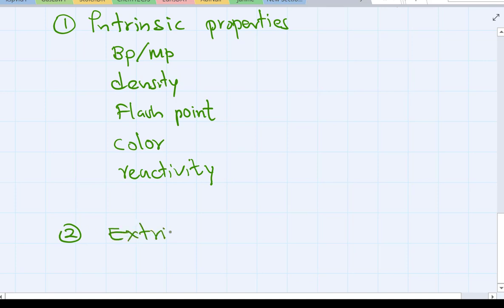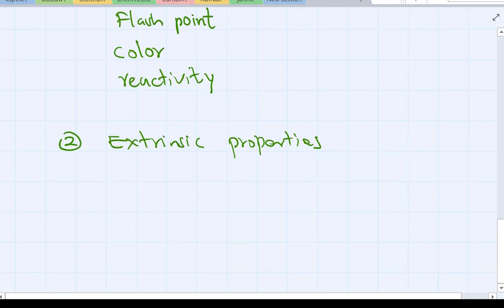Now what's the other one is extrinsic properties, sometimes we call it extensive. So what's that mean? These are actually the big letters. So V, volume.